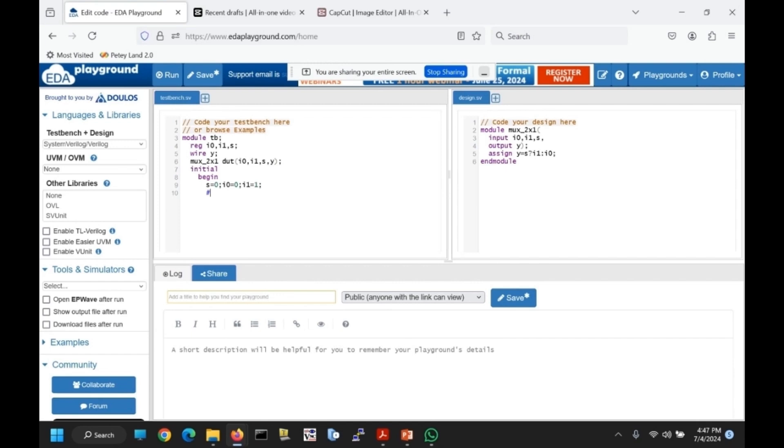Here I am giving hash 5 time delay. For printing those values, I am using dollar display. s is equal to %b, I0 is equal to %b, I1 is equal to %b, y is equal to %b. s, I0, I1, y.